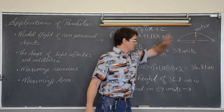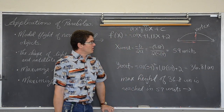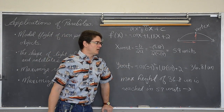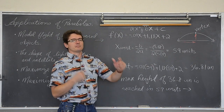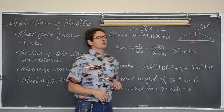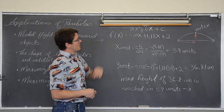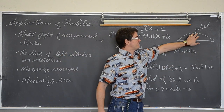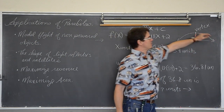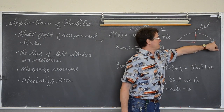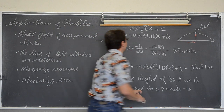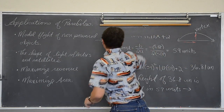So the maximum height of 36.81 units is reached after 59 units of horizontal travel — there is the vertex. Any problem that talks about objects being thrown, tossed off a building, on the football field, or even shooting a bullet — once it leaves the gun it follows a parabolic path because it is not under its own power. Those are all modeled with parabolas, and quite often we find the vertex. You might even find how far the ball travels by finding the x-intercepts using the quadratic formula or factoring. Let's take a look at another example.